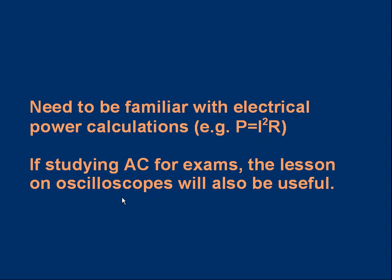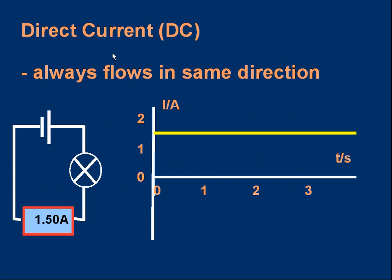Let's start with direct current, DC. A direct current is one that always flows in the same direction. For example, if you have a cell with a bulb and an ammeter — I've shown a digital ammeter so we can see the reading — the current always flows in the same direction; clockwise, conventional current flows positive to negative. Let's suppose the current is 1.5 amps. We could plot a graph of current versus time: at different times the current is 1.5 amps — it's a steady horizontal line.